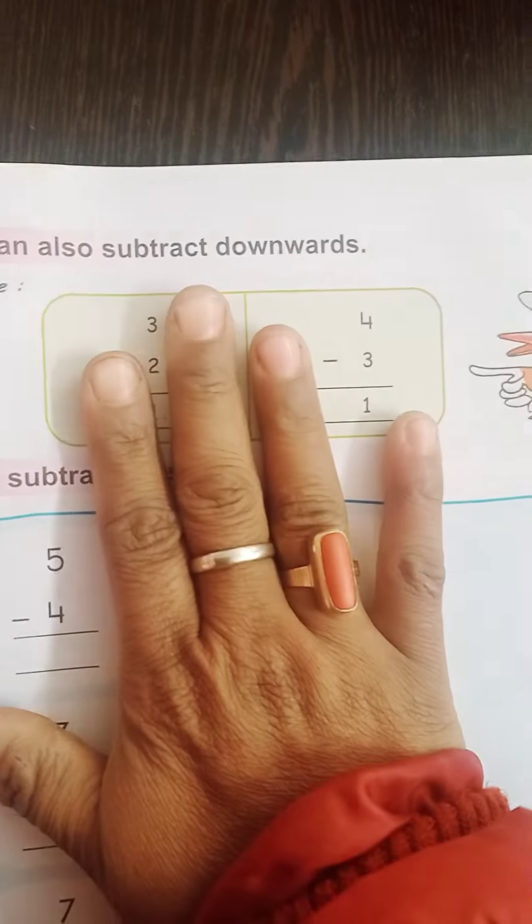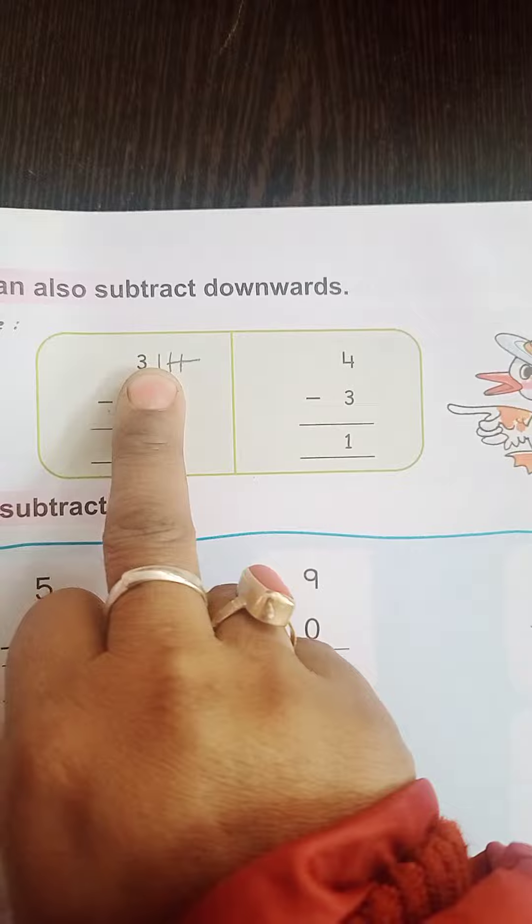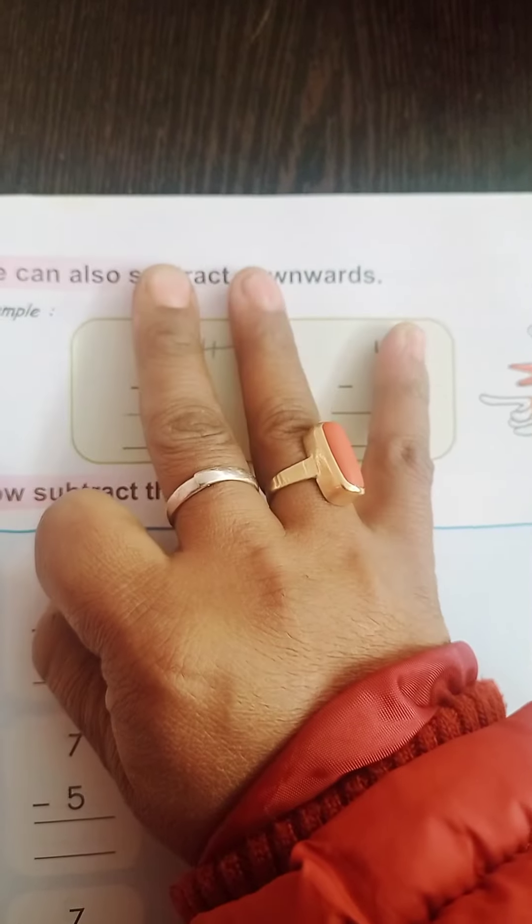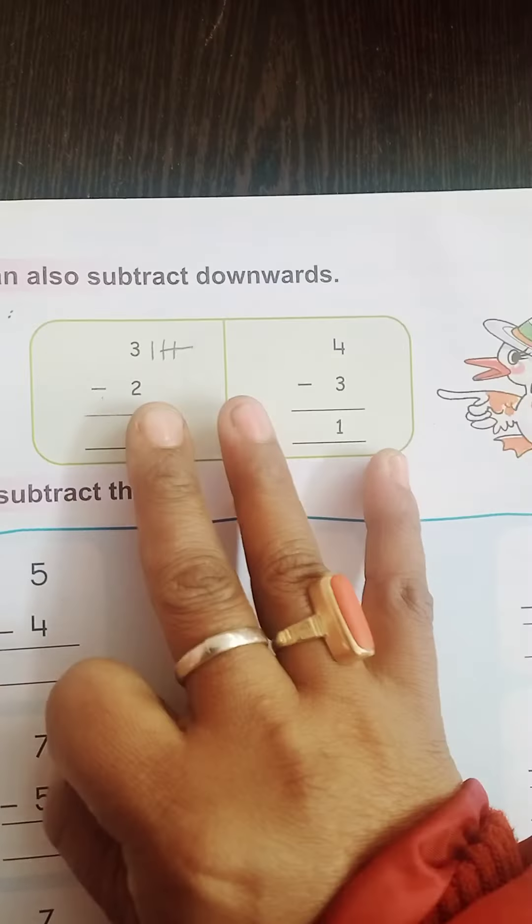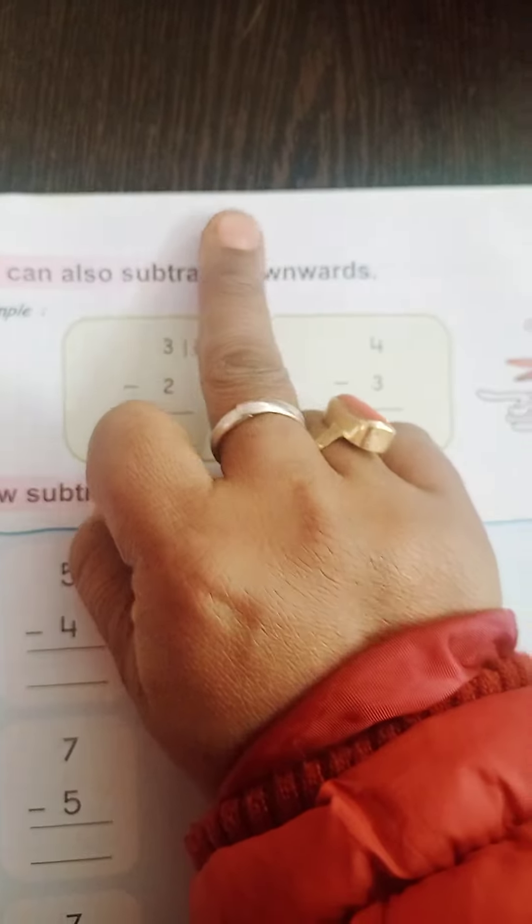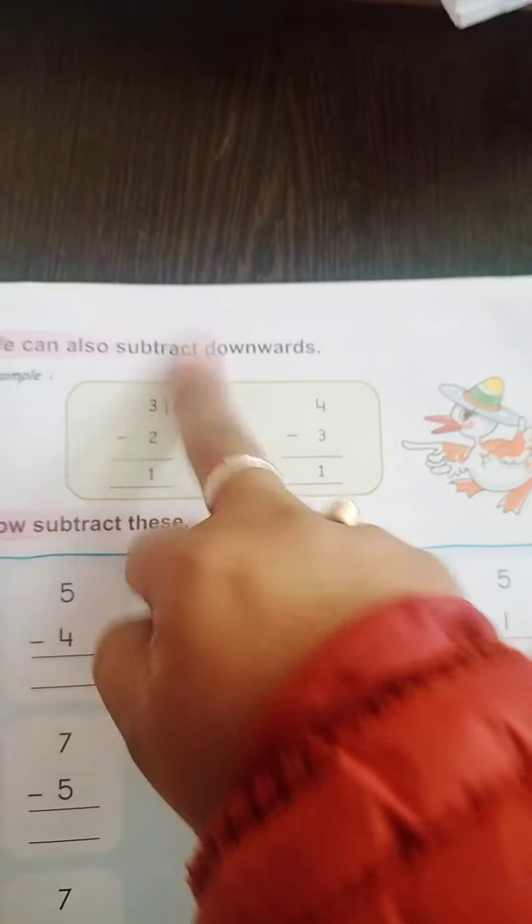You can also do with your finger, okay? Now, first number 3. So, 1, 2, 3. Now, second number is 2. So, 1, 2. So, kya bach gya? 1, okay?